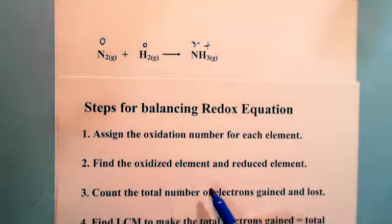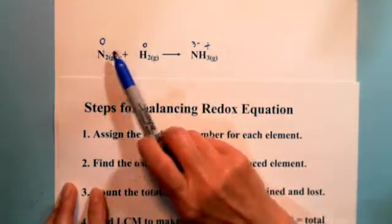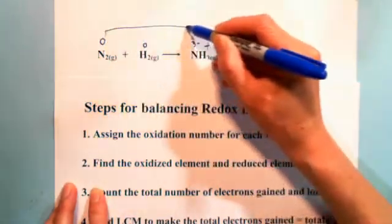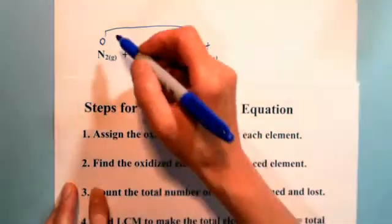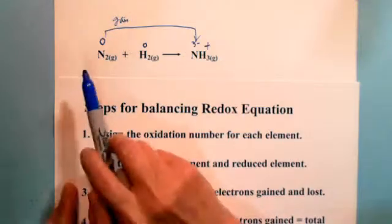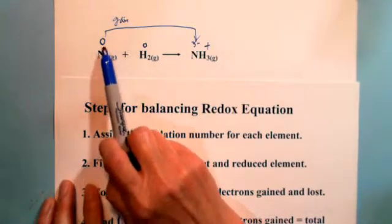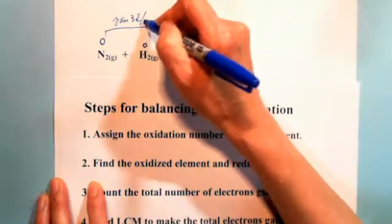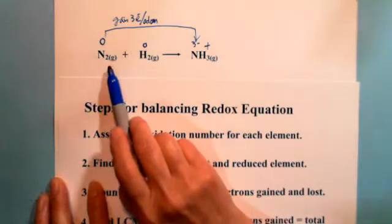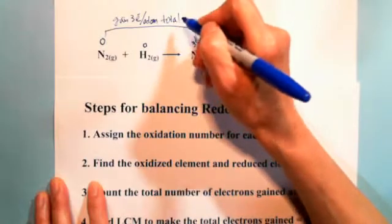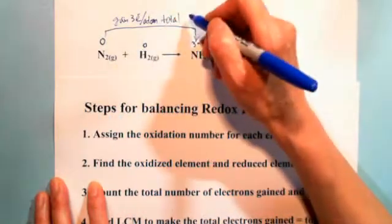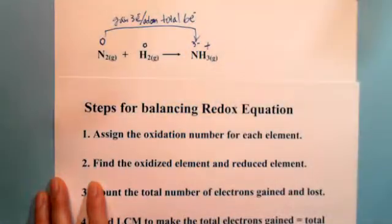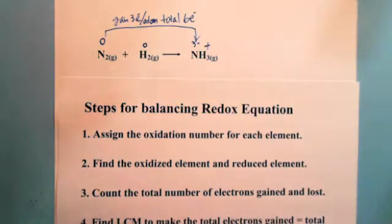Step two: find the oxidized element and the reduced element. Nitrogen goes from zero to negative three — it becomes more negative, meaning it gains electrons. For each nitrogen atom, it gains three electrons. With two nitrogen atoms, the total electrons gained is six. Since nitrogen gains electrons, it is reduced.